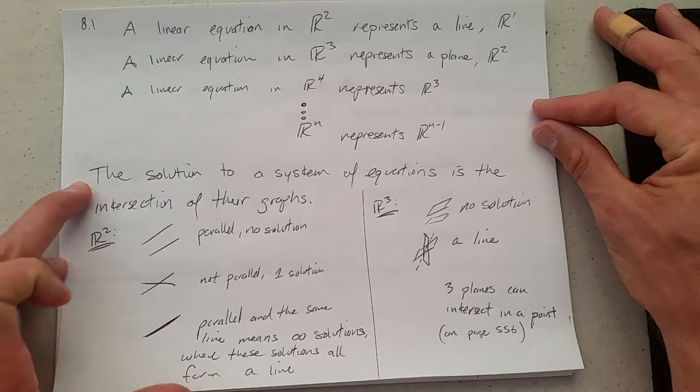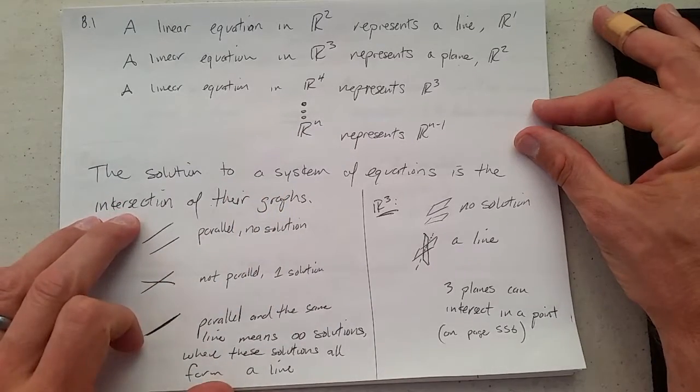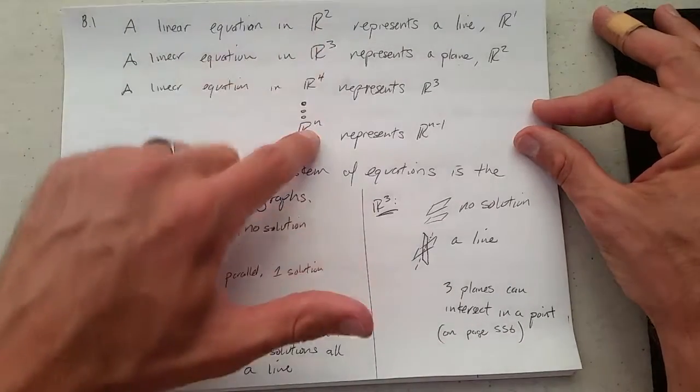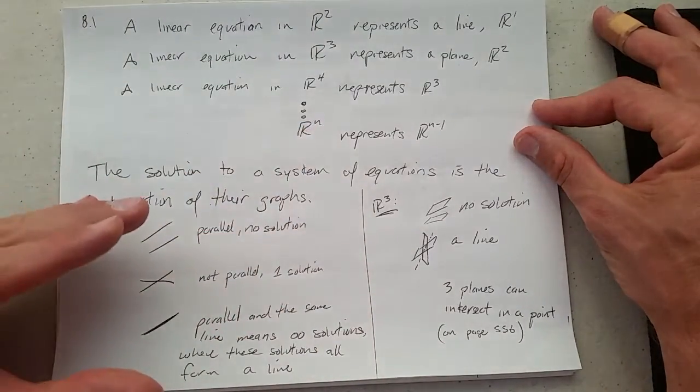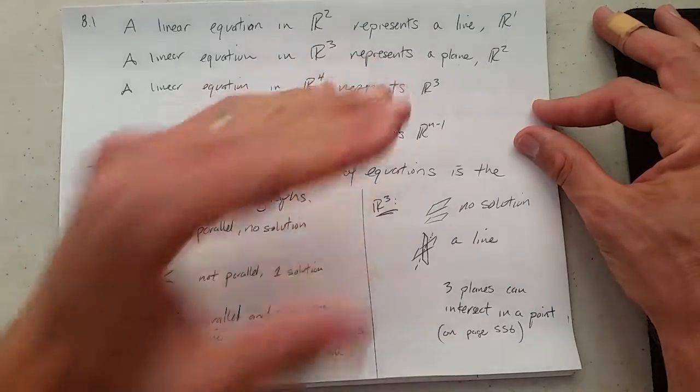The solution to a system of equations is the intersection of all of their graphs. We talked about what a single linear equation graph looks like in different dimensions. If you have multiple systems, the solution is the intersection of all of their graphs.